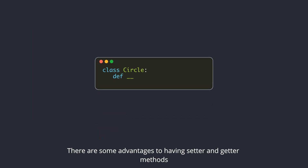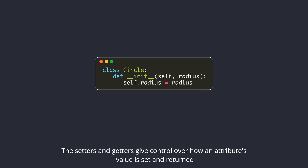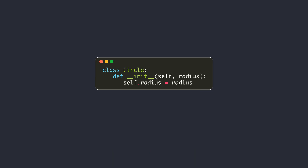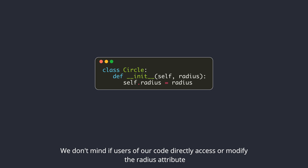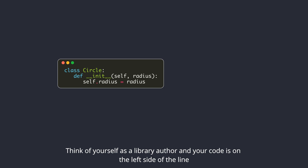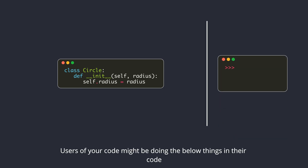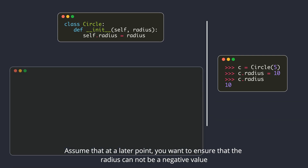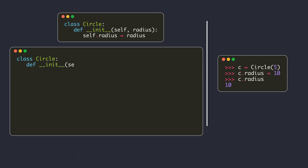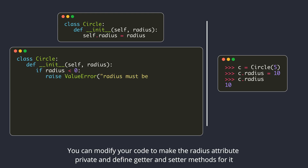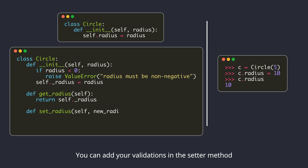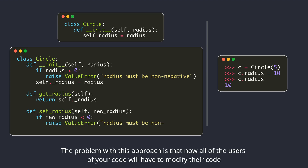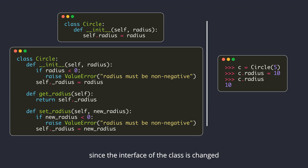There are some advantages to having setter and getter methods. The setters and getters give control over how an attribute's value is set and returned. For example, assume that we wrote our library code allowing users to directly access or modify the radius attribute. Think of yourself as a library author — your code is on the left side of the line and users of your code might be doing various things in their code. Assume that at a later point, you want to ensure that the radius cannot be a negative value. You can modify your code to make the radius attribute private and define getter and setter methods for it, adding your validations in the setter method. The problem with this approach is that now all of the users of your code will have to modify their code since the interface of the class is changed.